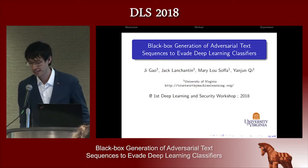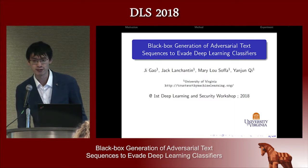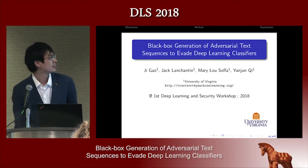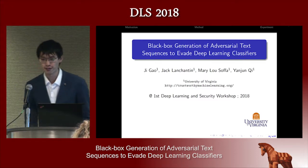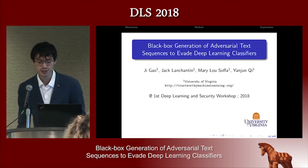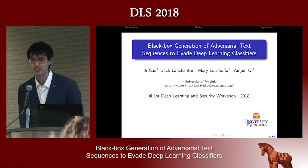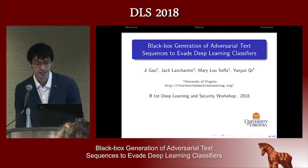Hello everyone. I'm Ji from University of Virginia. Today I'm very happy to introduce my work, Deep World Bug, which can generate adversarial text examples to a deep learning classifier.